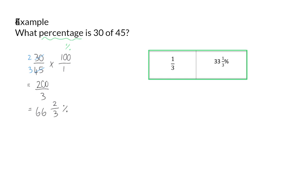Or, again, you could have chosen to know that a third is 33 and a third percent, and that is why this is then double that value. You can also choose to rewrite this in decimal form as 66.67 percent.